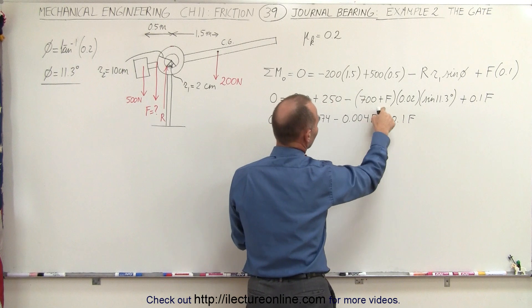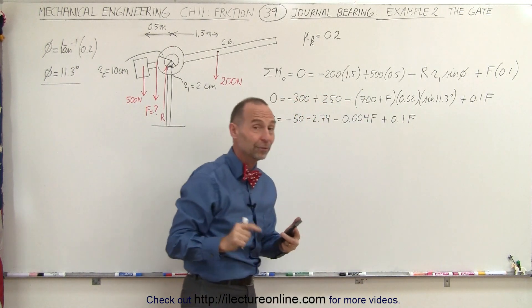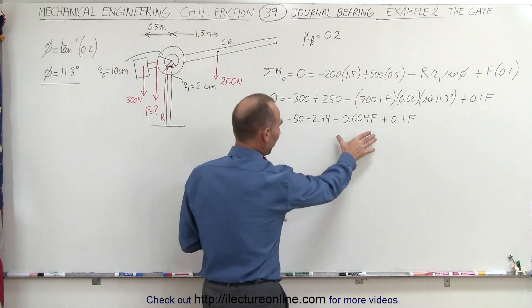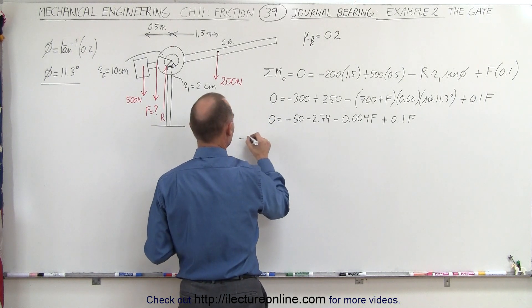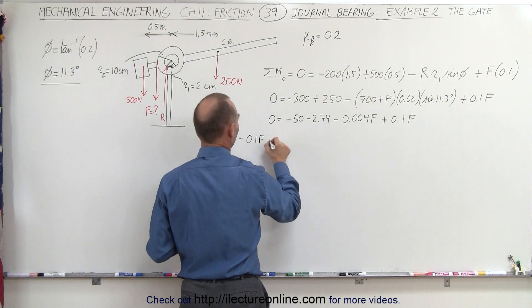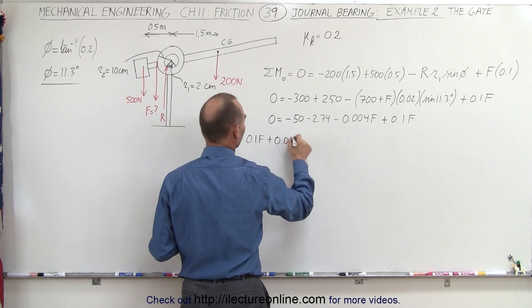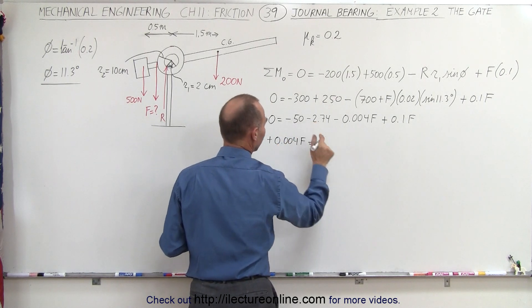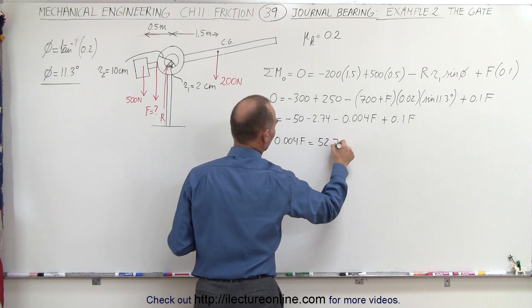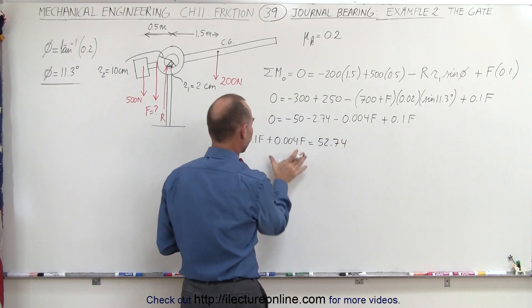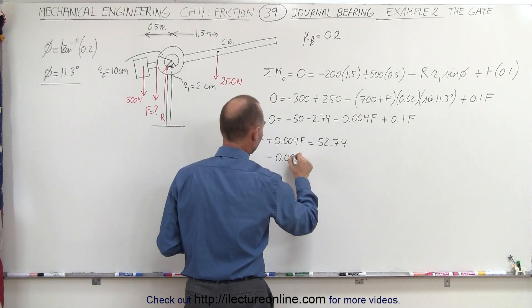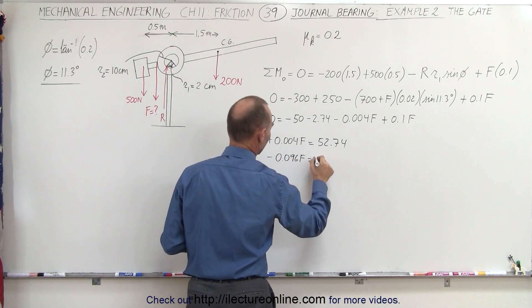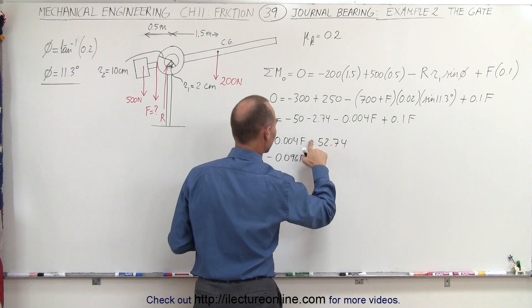Make sure I get the signs right. So this is a negative, and that's a plus. There we go. Now we're good. Now solving this for F, moving F to the other side, we get minus 0.1 F plus 0.004 F is equal to, combining these two, 52.74, and then combining these two, we get minus 0.096 F equals, and that should be a minus, minus 52.74.